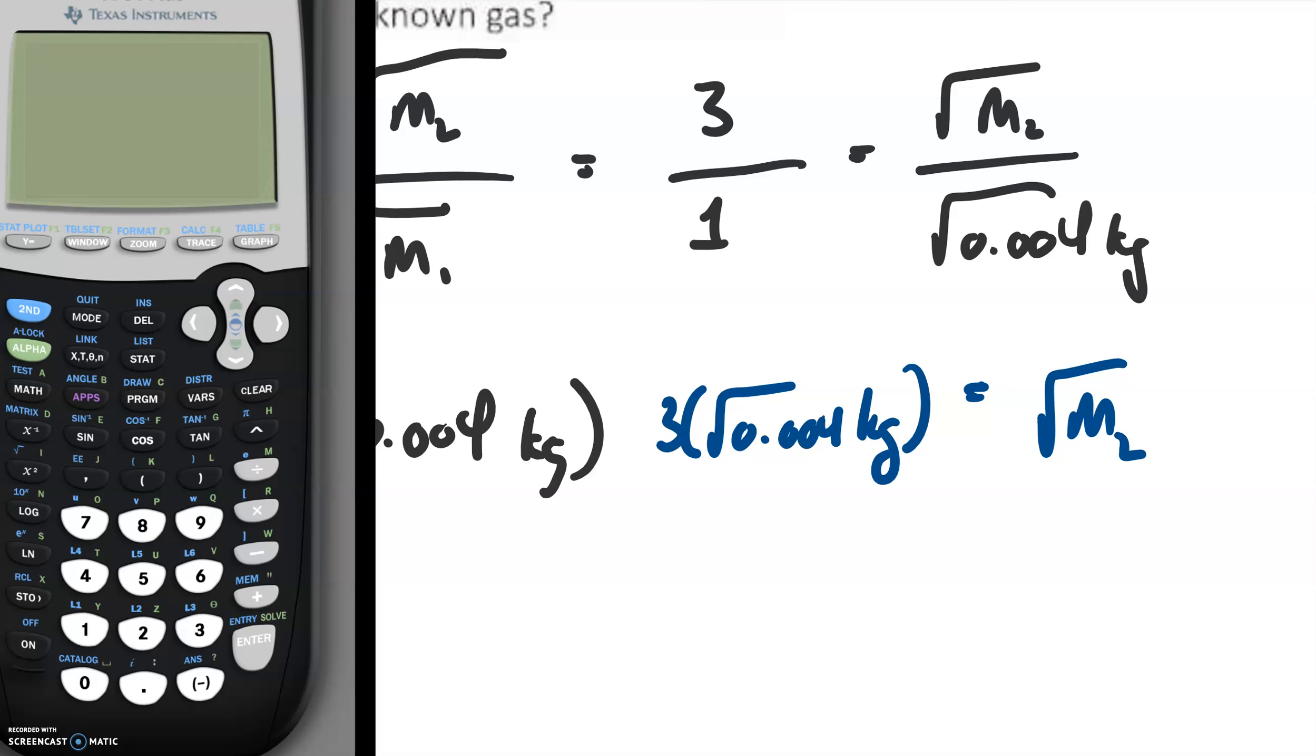So here's my calculator and we're going to say 3 times the square root of 0.004. And this is 0.1897.